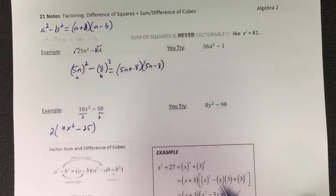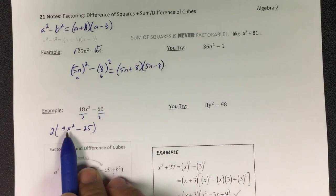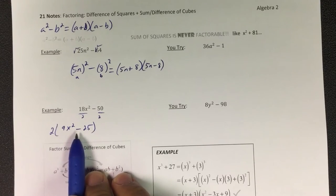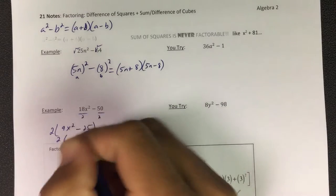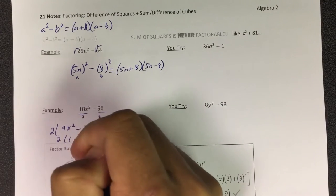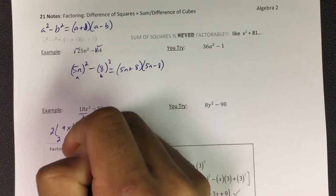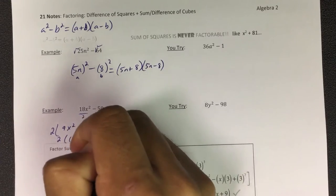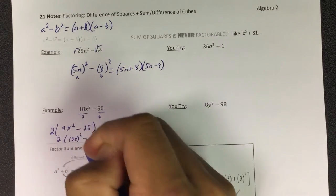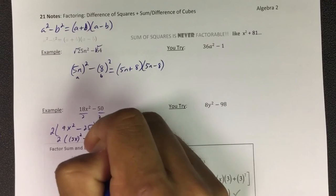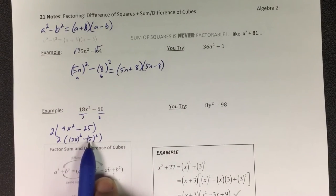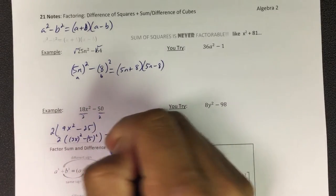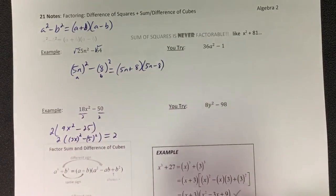This I can take the square root of. So this is now 2 times, the square root of 9 is 3, so that's 3x² minus 5². Okay, so I still have this 2 out here but now I made it into a problem on the inside.